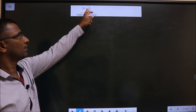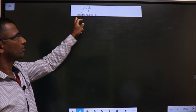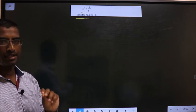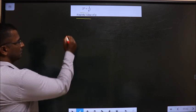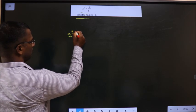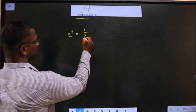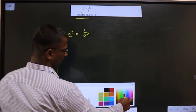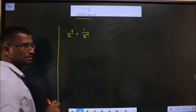2 power p equal to 1 by 8 power 4. Find the value of p. First, the given equation is 2 power p equal to 1 by 8 power 4. Now, how do you do this sum? See here.